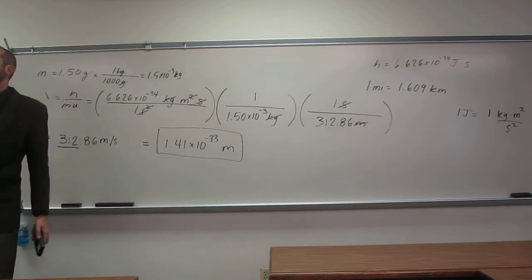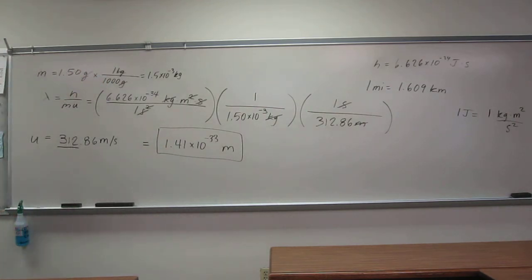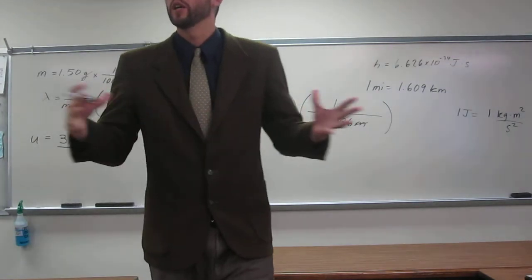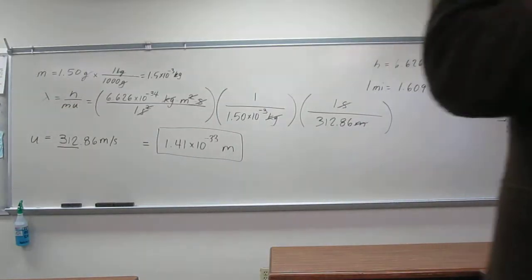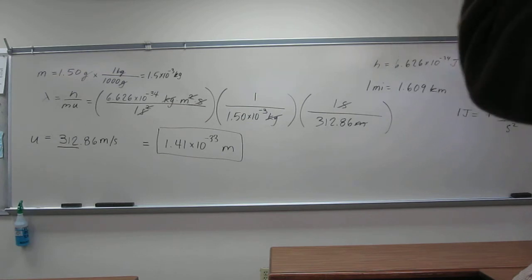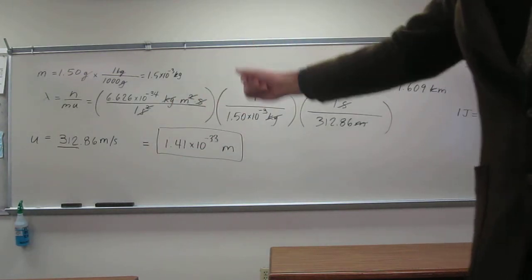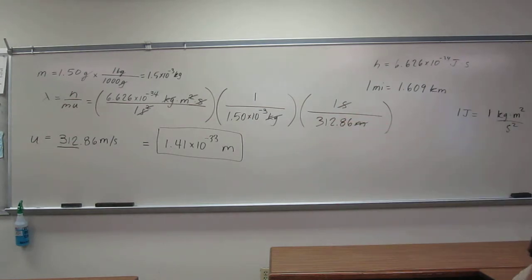The reason why you can't see the bullet waving in the air doing its little wave is because the wavelength is so tiny. If you had an even bigger item, the wavelength would be even smaller. But if you have something like an electron, the wavelength is huge, or a photon that's effectively massless.